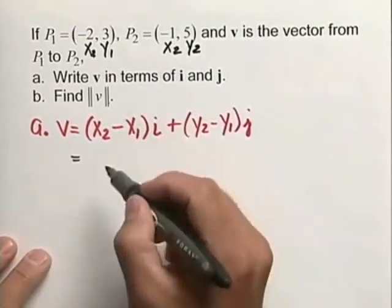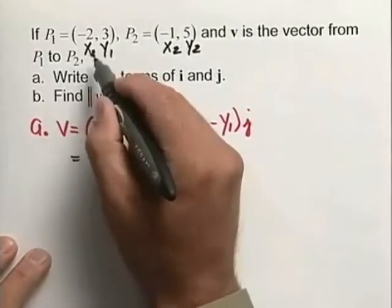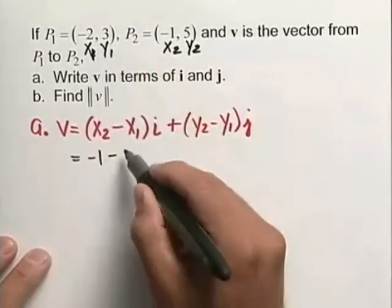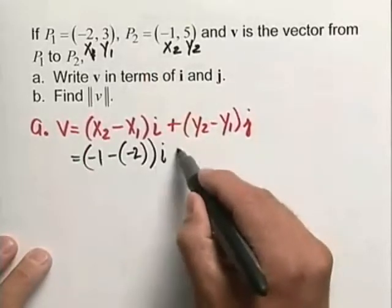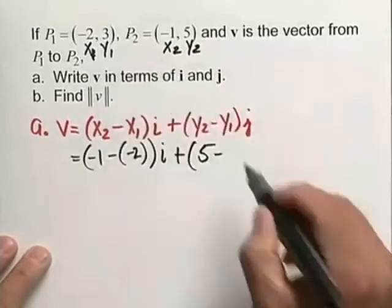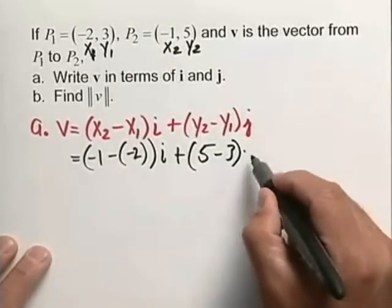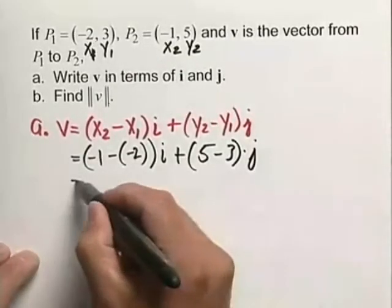So V in this case will be x2, which is negative one, minus x1—remember that's negative two—the quantity, times i, plus y2, which is five, minus y1, which is three, times j.